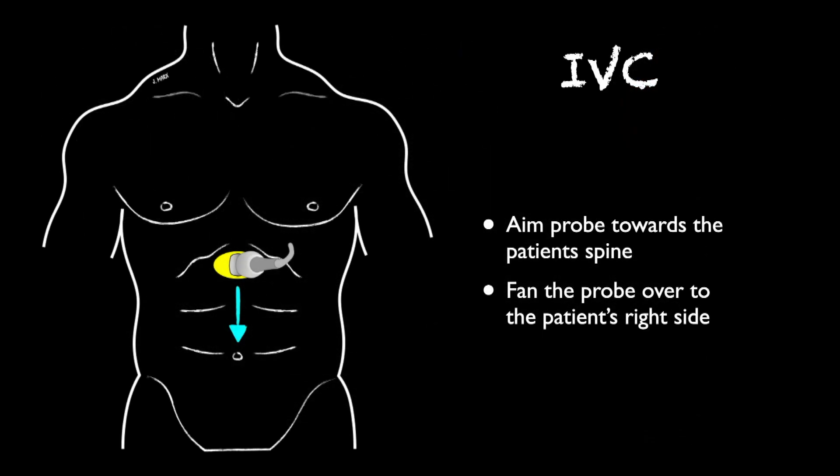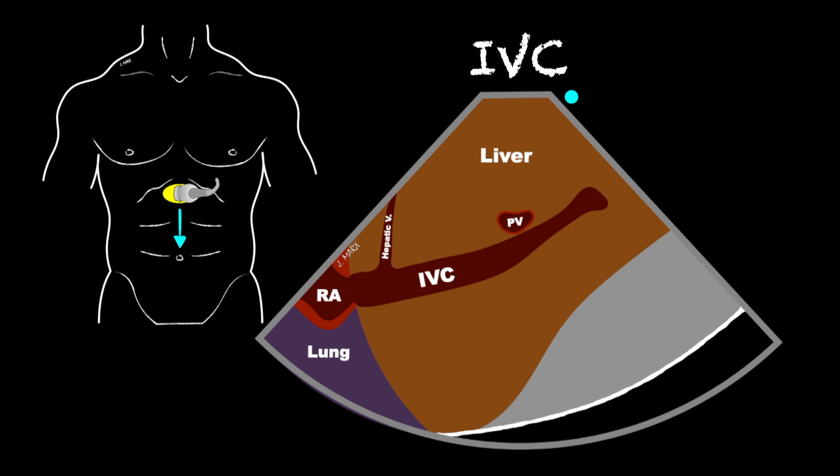From here, we're going to move forward to get an IVC view. All we have to do is start to angle the probe down, which gets us perpendicular again to the skin, and then fan over towards the patient's right. This will bring the IVC into view, and we'll get a view similar to this. We want to see the IVC traveling through the liver, and if we can, we want to try to identify that hepatic vein.